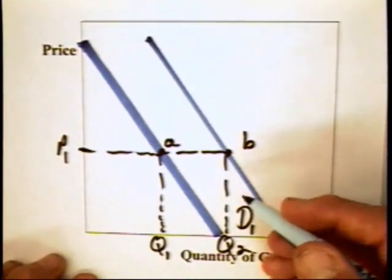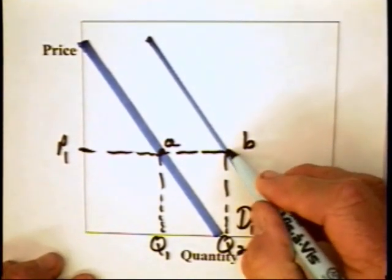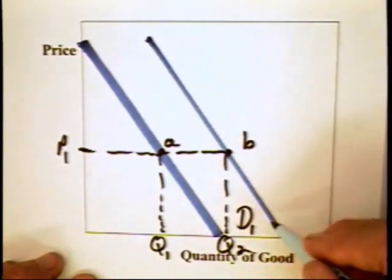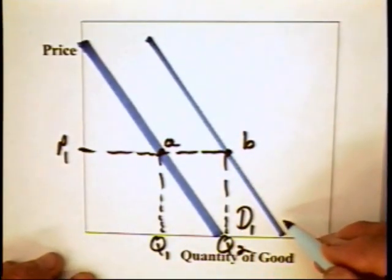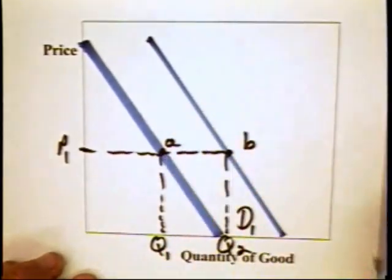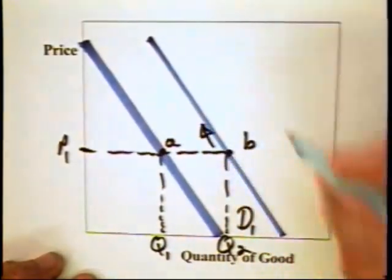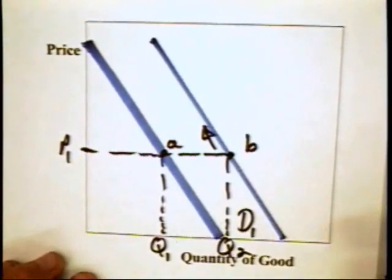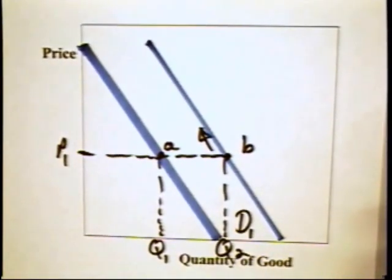But what's important, too, is that note that at point B, the firm is further down into the lower half of its demand curve, into the inelastic range than it is at A, which means that the firm has a greater opportunity to, indeed, raise its price and raise its revenues.